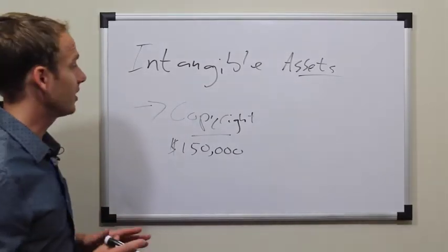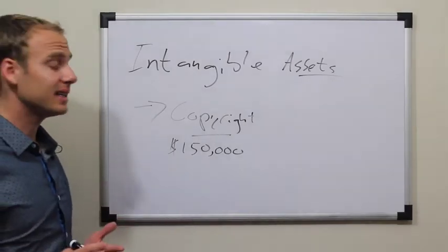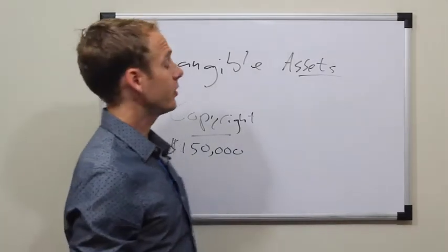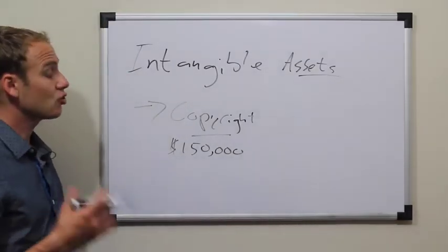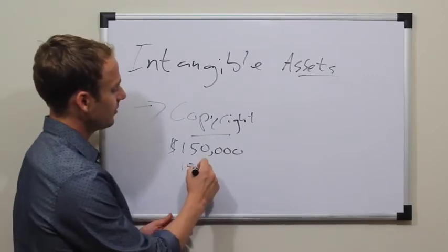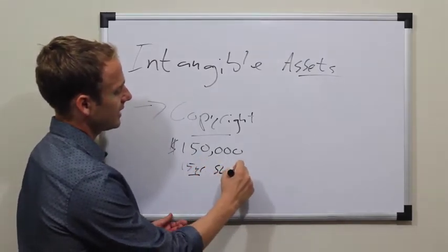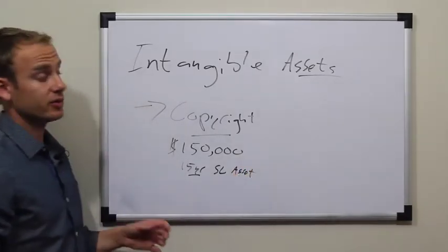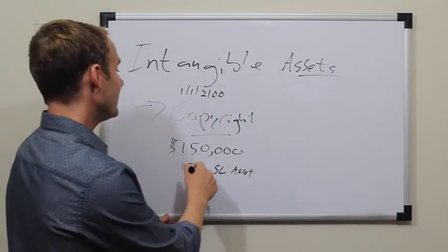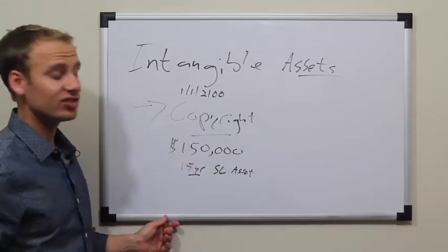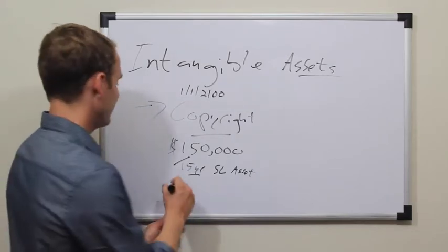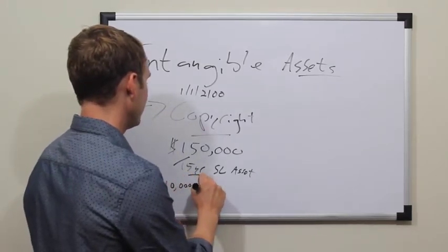We can't just go on our income statement or profit and loss and write off $150,000 right away — that is not proper. So we try to expense this over time. For tax purposes it might be treated slightly differently than for GAAP purposes, but let's say for sake of discussion it's a 15-year straight-line asset. So every year, assuming this was purchased on January 1, 2100, it is going to be $10,000 of expense — $150,000 divided by 15 years equals $10,000 per year.